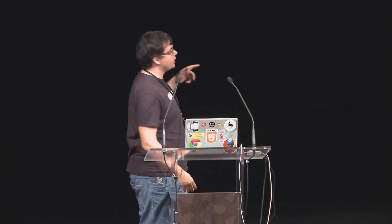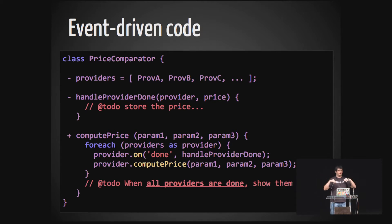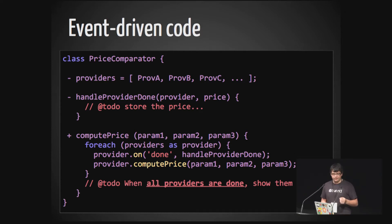Four minutes left. I'm going to finish this talk about application design, talking about something called promises. Throughout our talk, we've seen that this kind of code repeats a lot. You basically attach your event listeners to things that emit events and then you run the thing that will eventually emit the events.